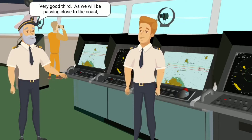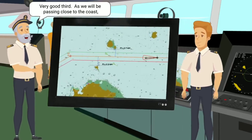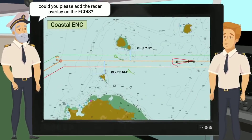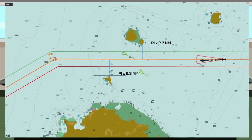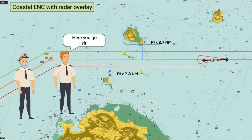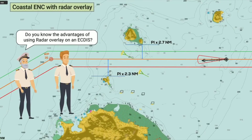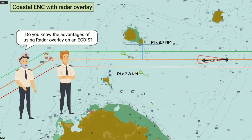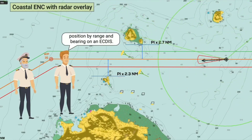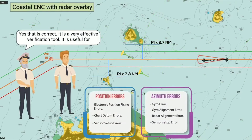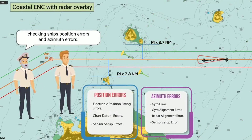Very good, Third. As we will be passing close to the coast, could you please add the radar overlay on the ECTIS? Yes, sir. Here you go, sir. Thank you, Third. Do you know the advantages of using radar overlay on an ECTIS? Yes, sir. It is very useful for reconfirming a ship's position by range and bearing on an ECTIS. That is correct — it is a very effective verification tool, useful for checking ship's position errors and azimuth errors.